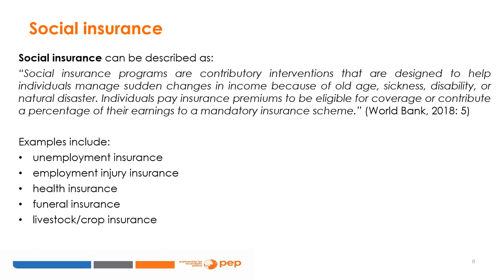The World Bank defines social insurance as contributory interventions designed to help individuals manage sudden changes in income because of old age, sickness, disability, or natural disaster. Individuals pay insurance premiums or contribute a percentage of their earnings to a mandatory insurance scheme. Shocks can be co-variant—affecting many people at the same time, such as floods, drought, or conflict—or idiosyncratic, meaning they affect individuals, such as illness or unemployment related to life course events like retirement, pregnancy, and old age. Schemes are funded through individual or household contributions in combination with government, employer, or development assistance support.